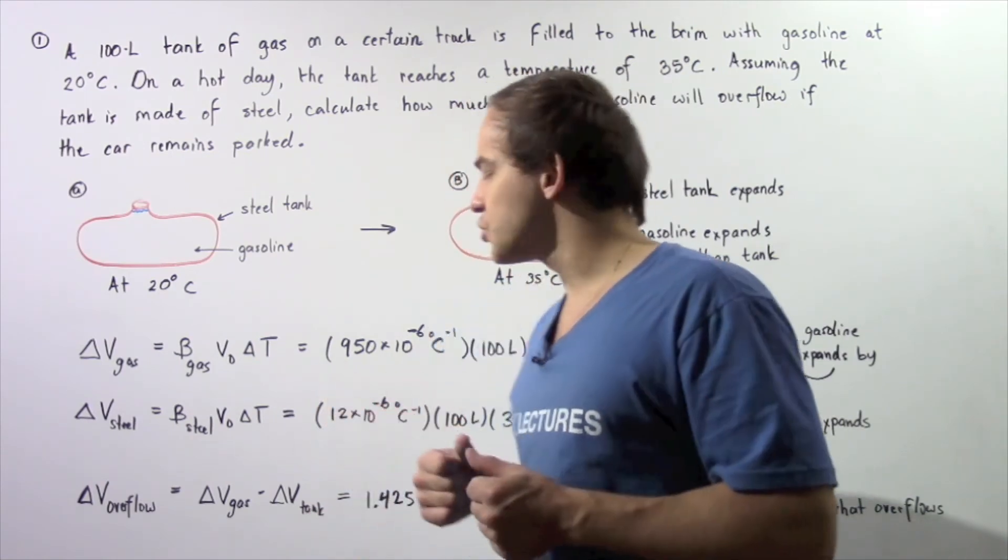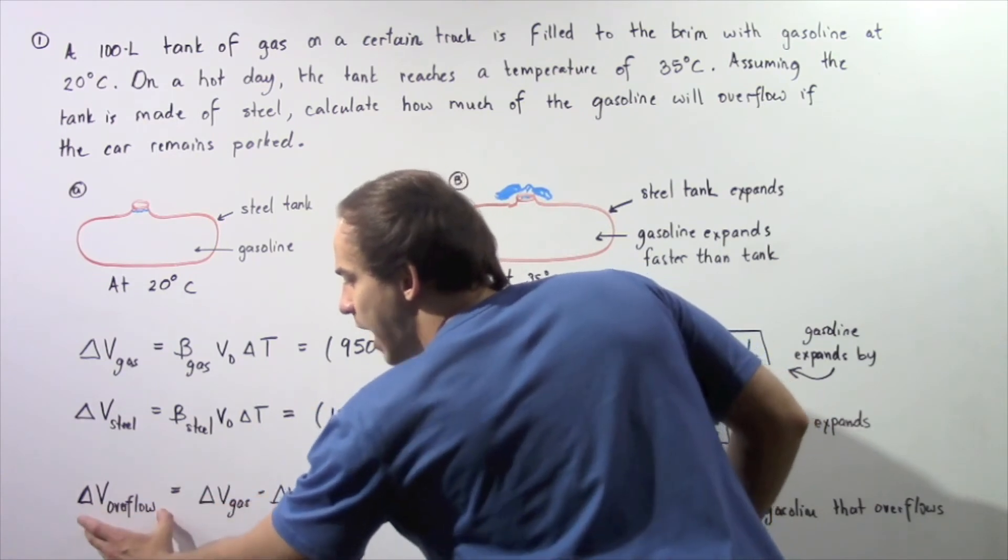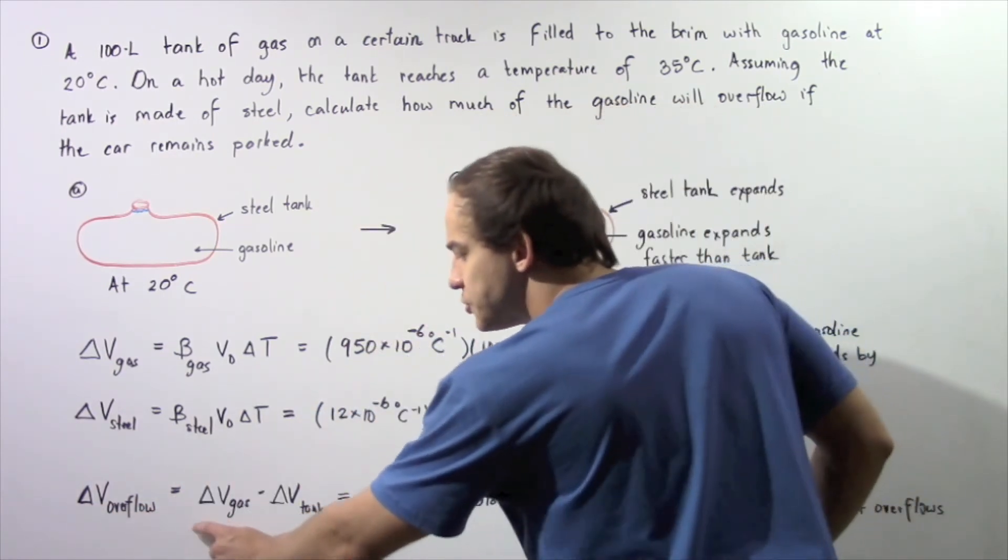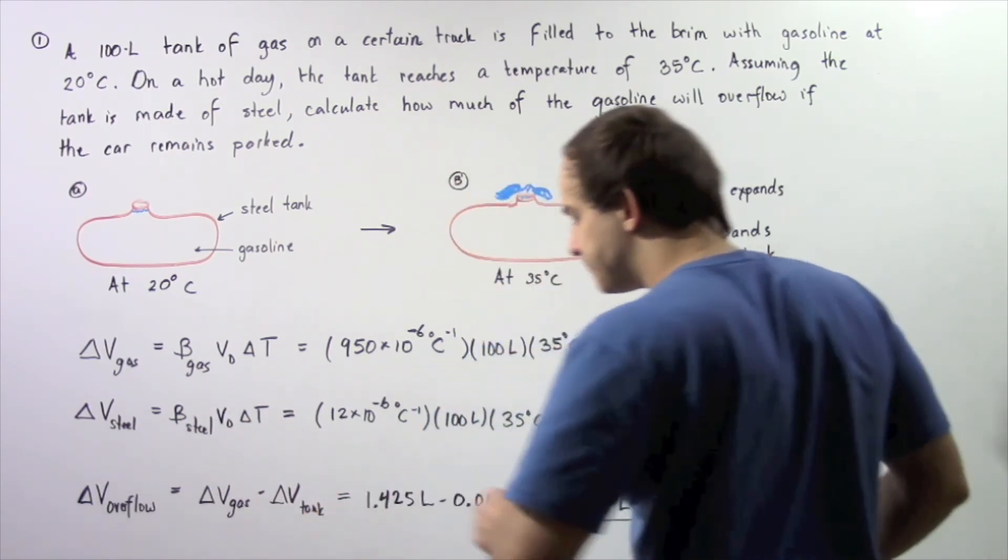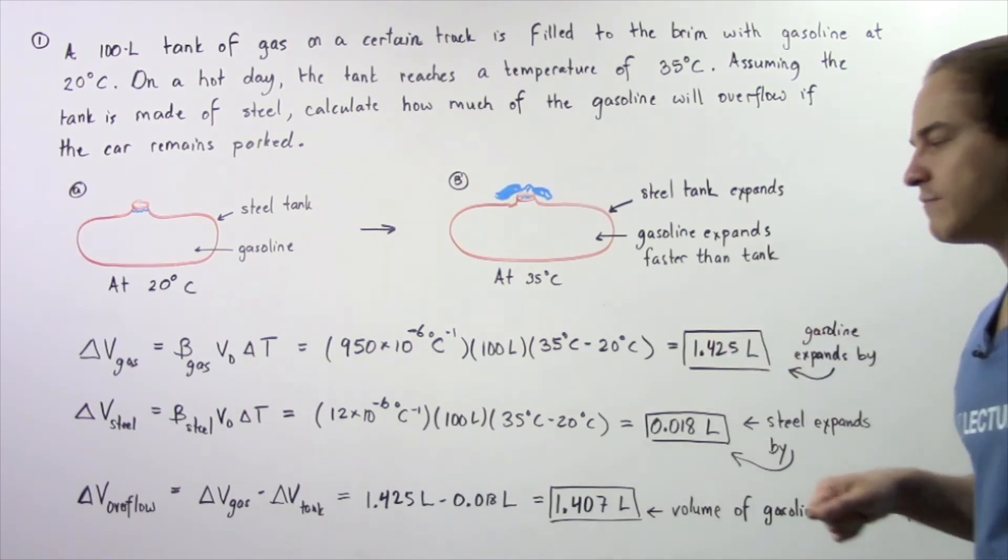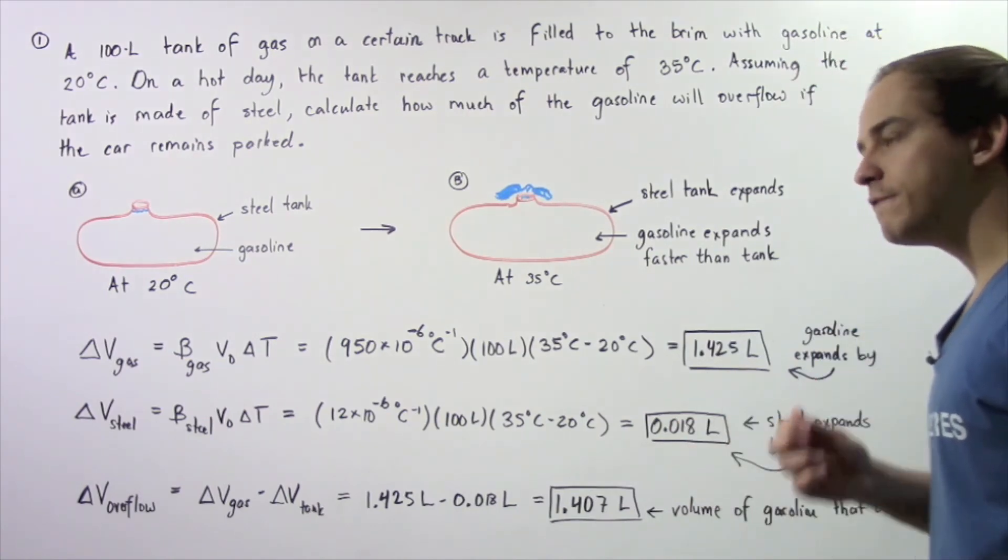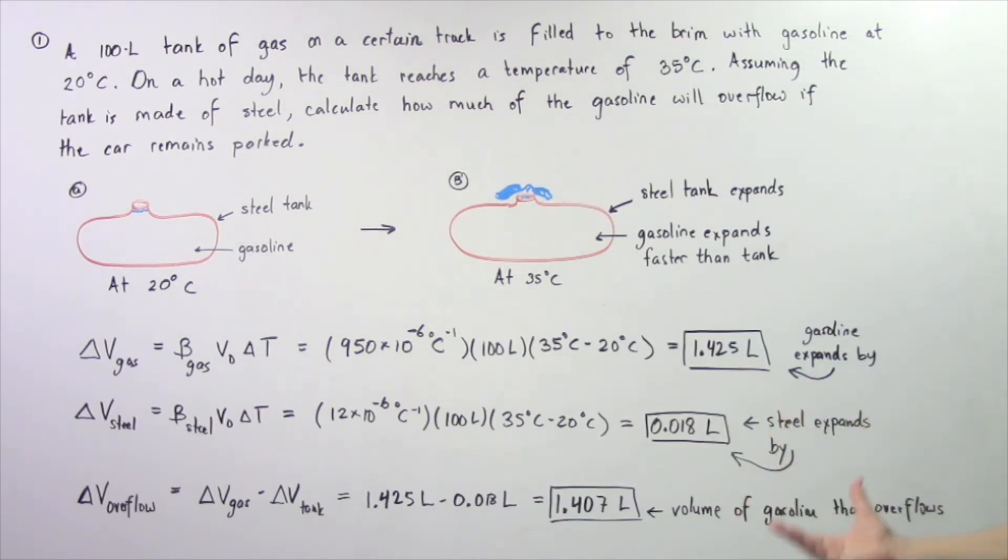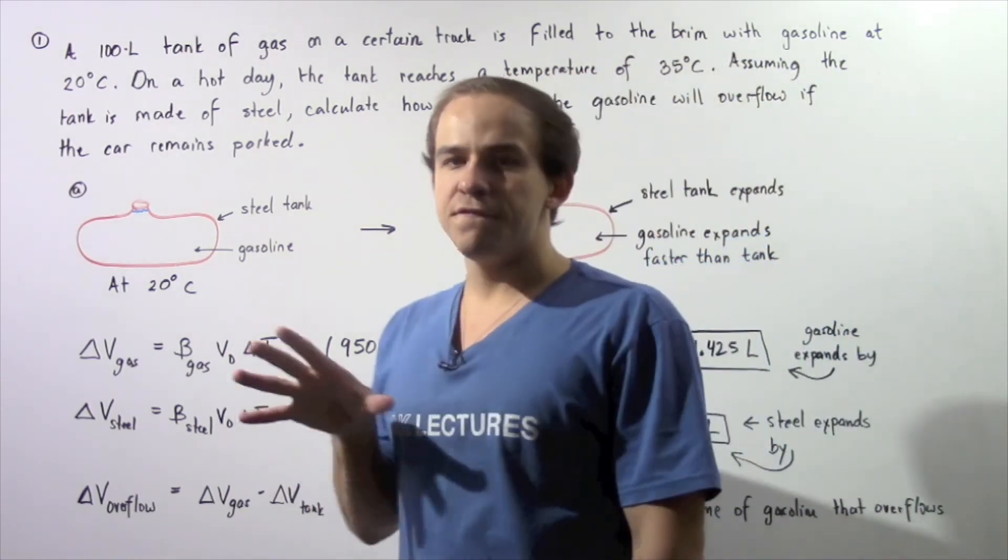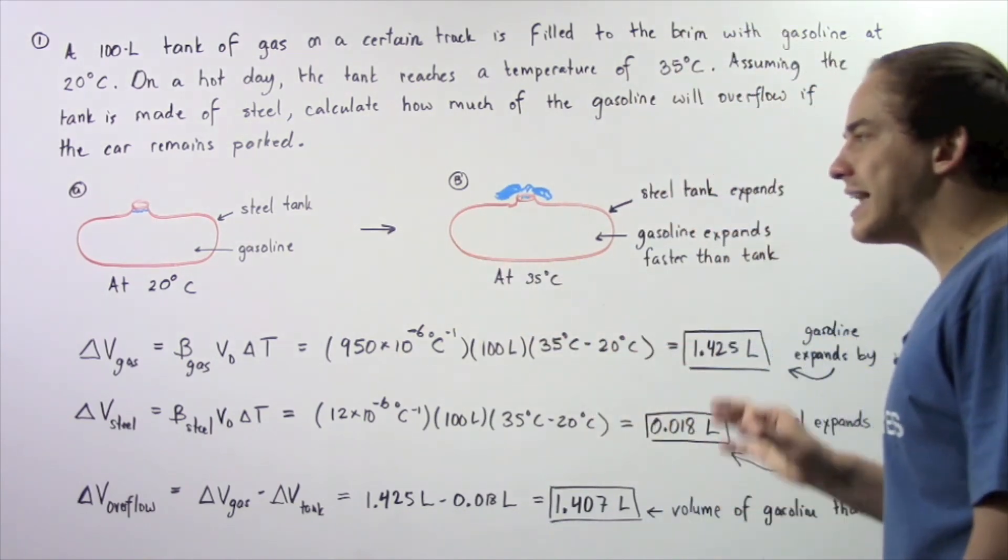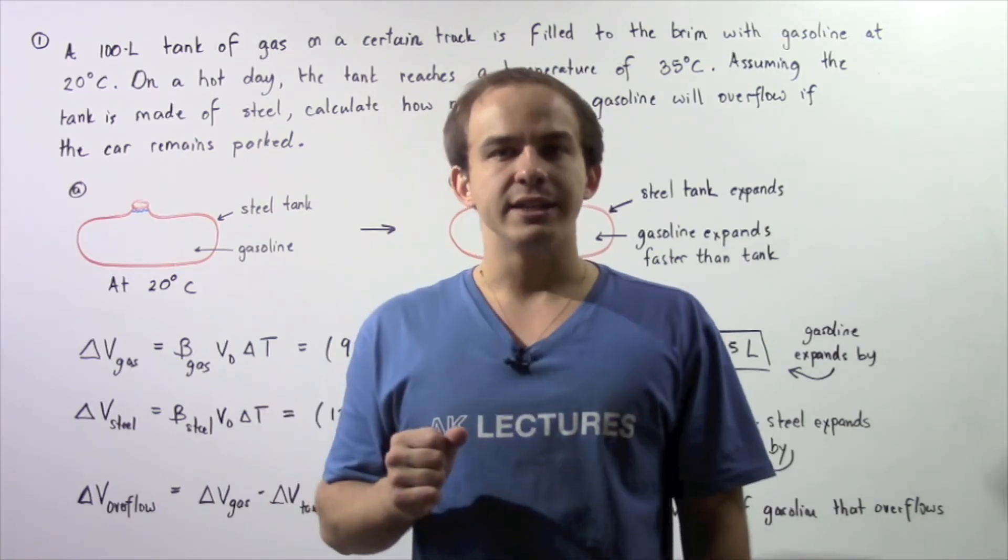Now to find how much of our gasoline overflows, we simply take the difference. We say our change in volume overflow is equal to the change in volume of the gas minus the change in volume of the tank. So 1.425 liters minus 0.018 liters gives us 1.407 liters is the volume of the gasoline that overflows as a result of the fact that our liquid, the gasoline expands at a faster rate than our steel tank, our solid object.